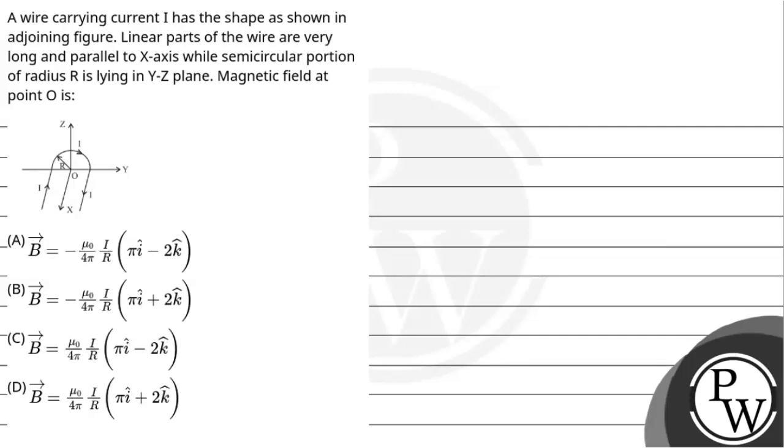Hello, let's get to the question. The question says a wire carrying current I has a shape as shown in the adjoining figure. Linear parts of the wire are very long and parallel to x-axis while the semicircular portion of radius R is lying in the y-z plane. The magnetic field at point O is.